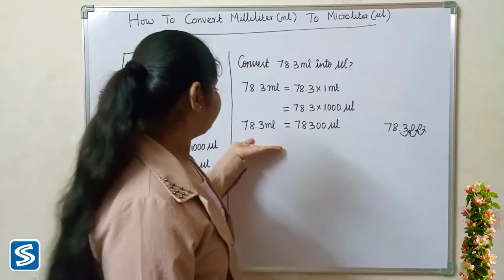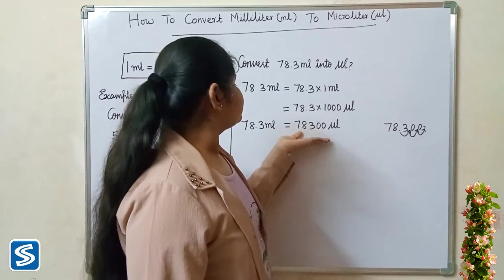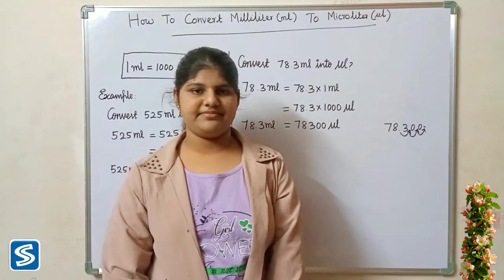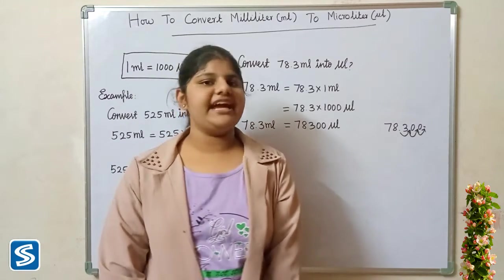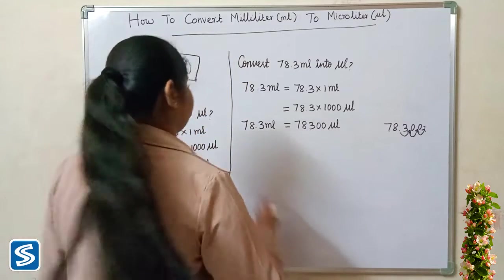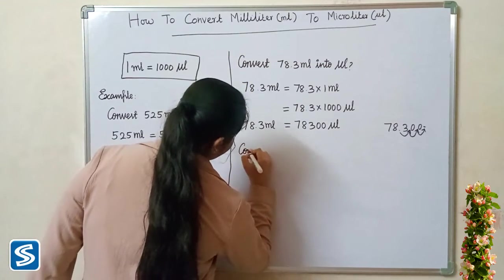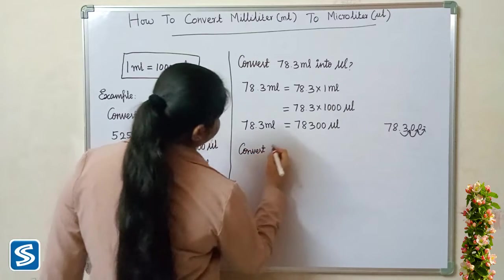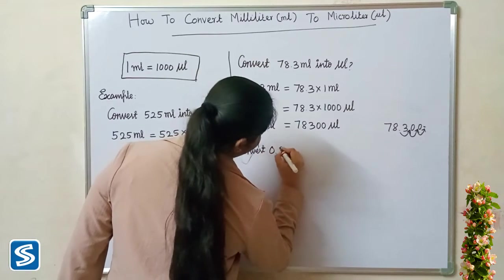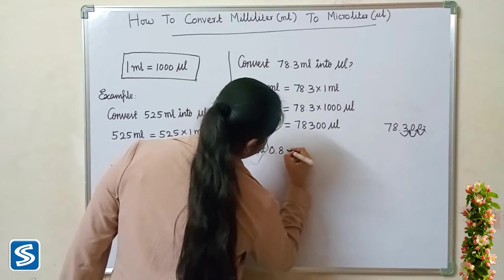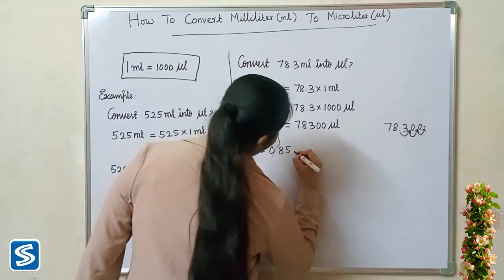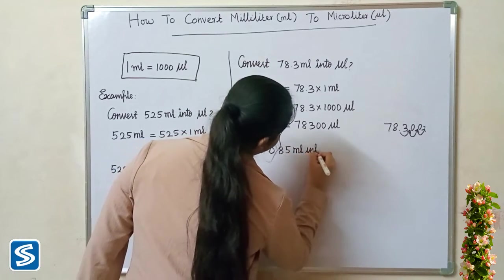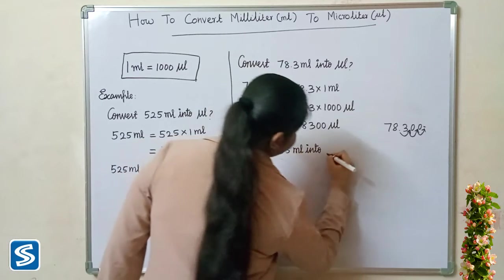So seventy eight point three milliliters will be seventy eight thousand three hundred microliters. Next we will take another example: convert zero point eight five milliliters into microliters.